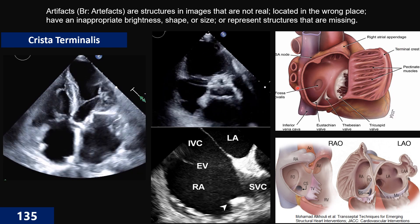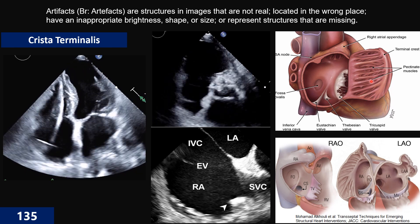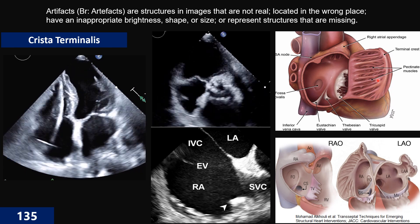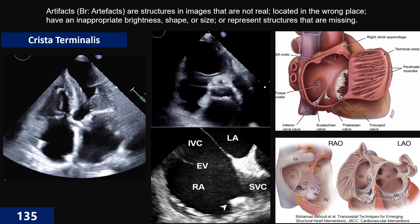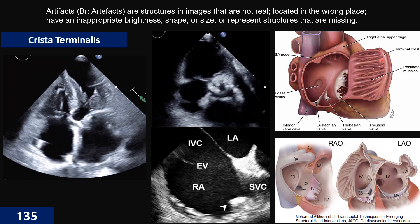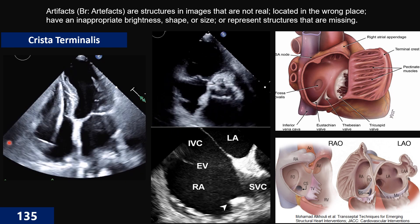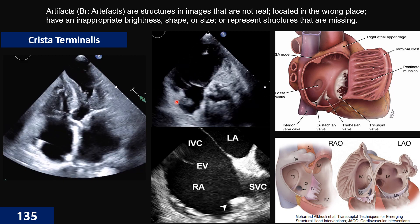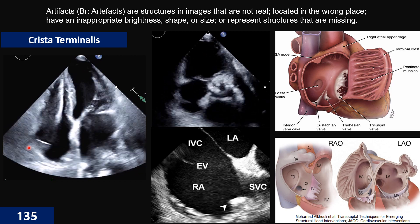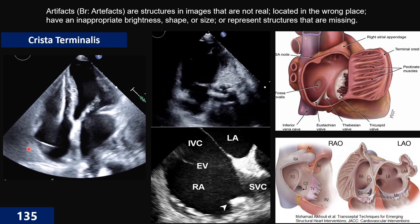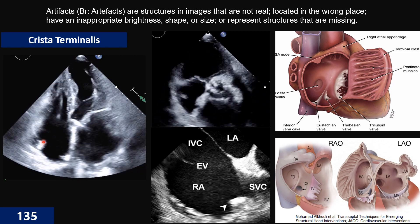Crista terminalis is a muscular ridge that extends from the anterior of the superior vena cava to the anterior of the inferior vena cava. All pectinate muscles insert from there to the atrioventricular groove and to the auricle. This structure has a smooth border and very hyperechoic echogenicity. As you can see here in apical 4, we see it at the level anterior to the IVC — smooth and hyperechoic.